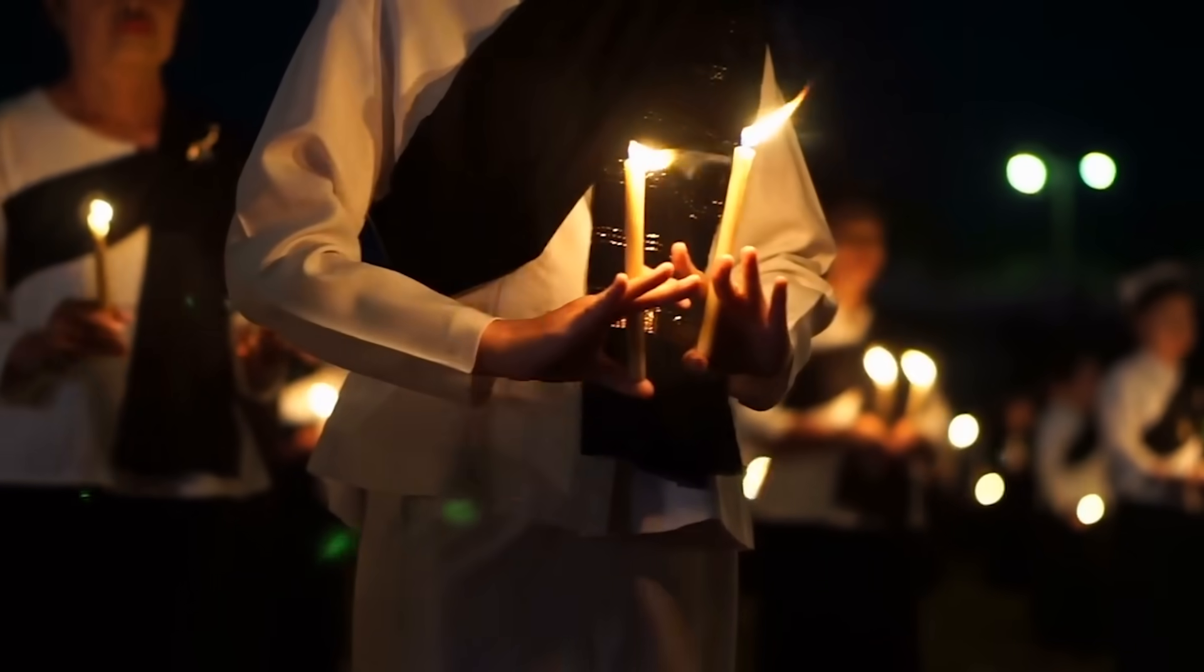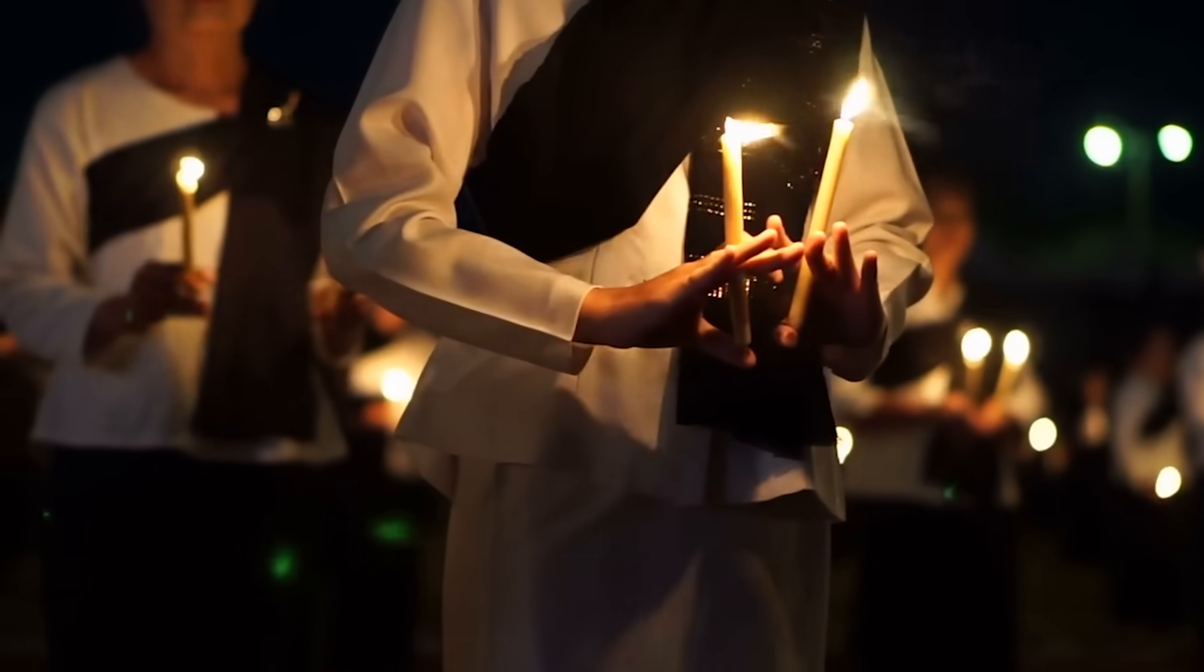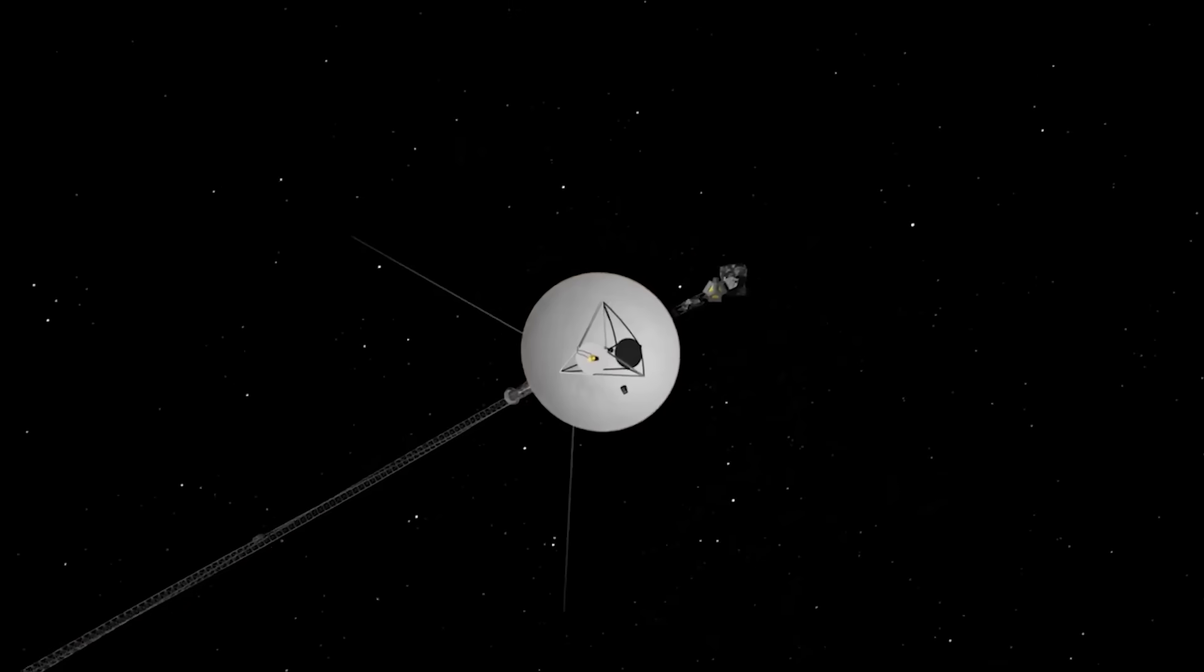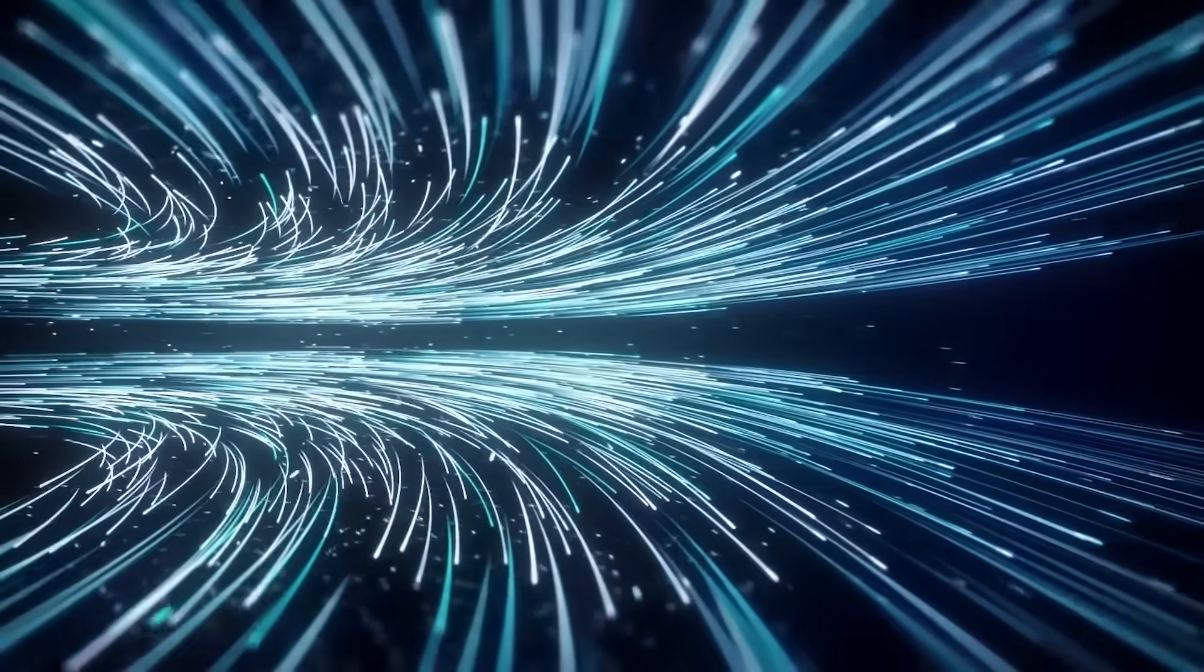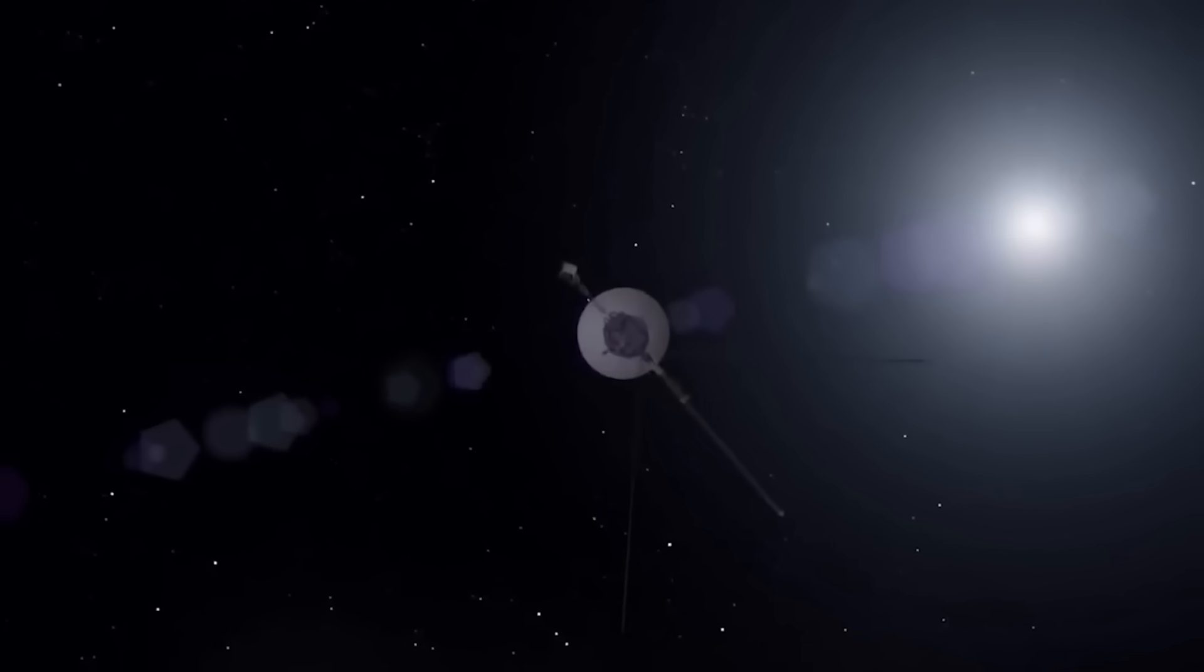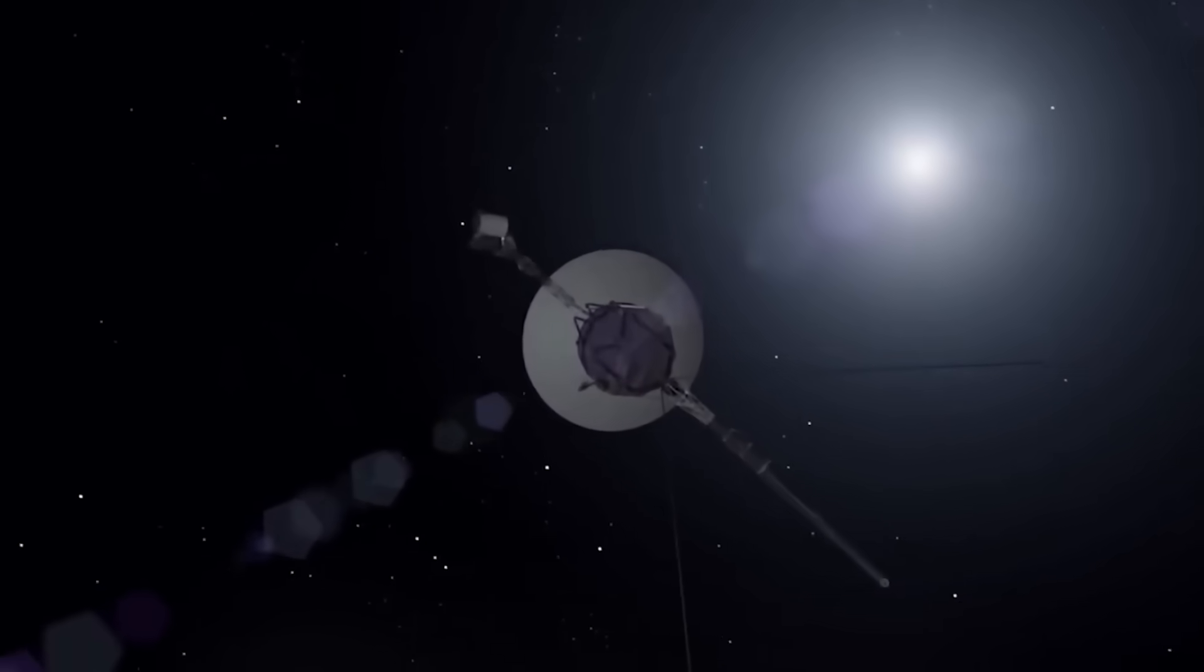Religious leaders and philosophers weighed in, many interpreting the signal as a form of contact, not just from another species, but perhaps from a transcendent intelligence. The implications weren't just scientific, they were existential. If Voyager 1 had become a link between humanity and a larger cosmic structure, what role did we play in that structure? Were we the architects of the first handshake, or merely the recipients of a call that was always meant to come?